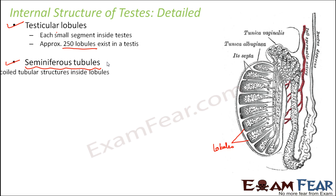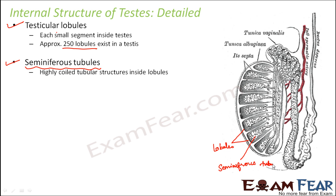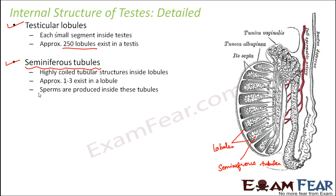Seminiferous tubules are highly coiled tubular structures present inside the lobules. Inside each lobule you can see the white colored, highly coiled tube-like structures — these are the seminiferous tubules, and inside them sperms are actually produced. Approximately 1 to 3 seminiferous tubules exist in each lobule. Seminiferous tubules are the most important structures inside the testis because this is where exact sperm production takes place.